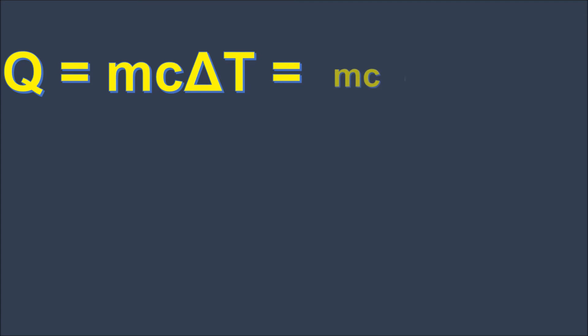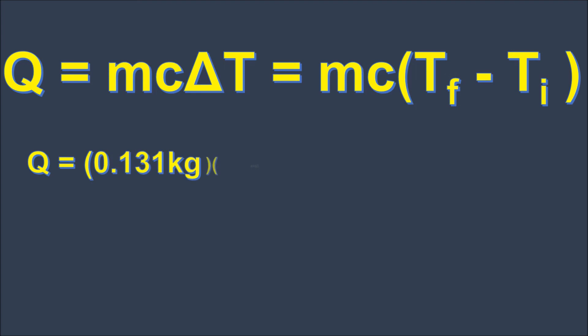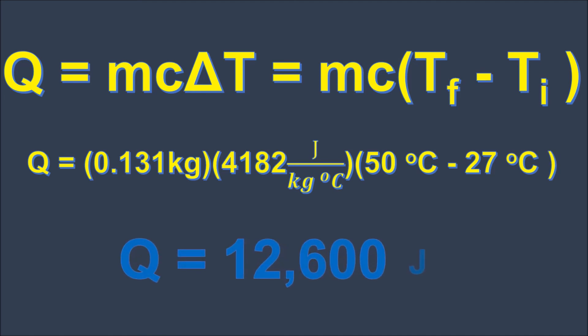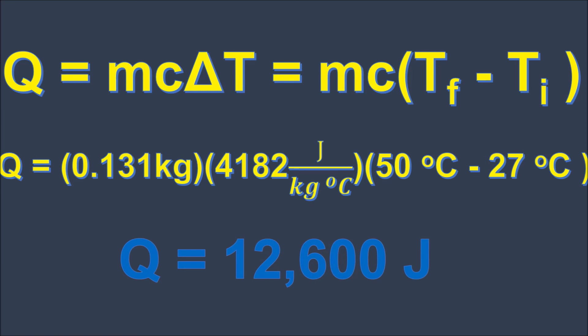Now using our equation Q is equal to MC delta T, we will compute for the heat absorbed by water. The mass of the water is 0.131 kilogram. The specific heat is 4,182 and the change in temperature is 23 degrees Celsius. So we get the heat absorbed as 12,600 joules.